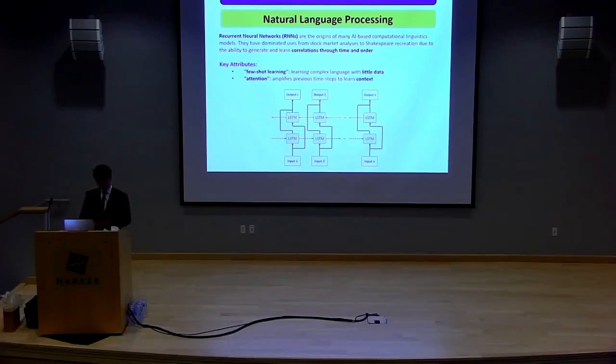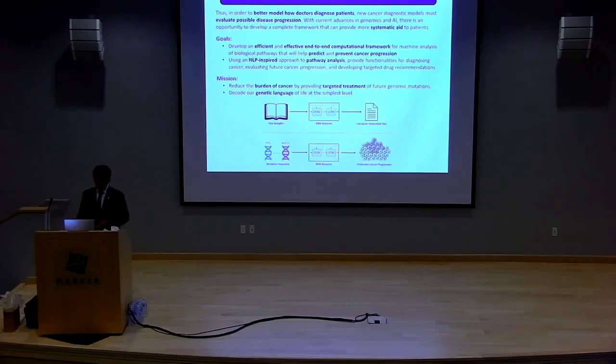The second is attention. And attention is how these networks learn context. Because when you're in a recurrent neural network, when you're analyzing the tenth data point, you're not looking at the tenth data point alone. You're looking at everything from one to ten and analyzing how we got to this point. What's changed to make this happen?